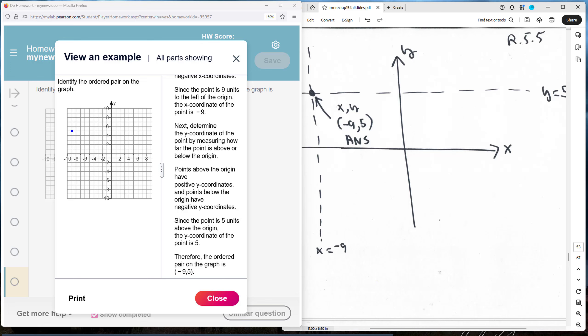This is R.5.5. Identify the ordered pair on the graph. What I did was I drew it out.